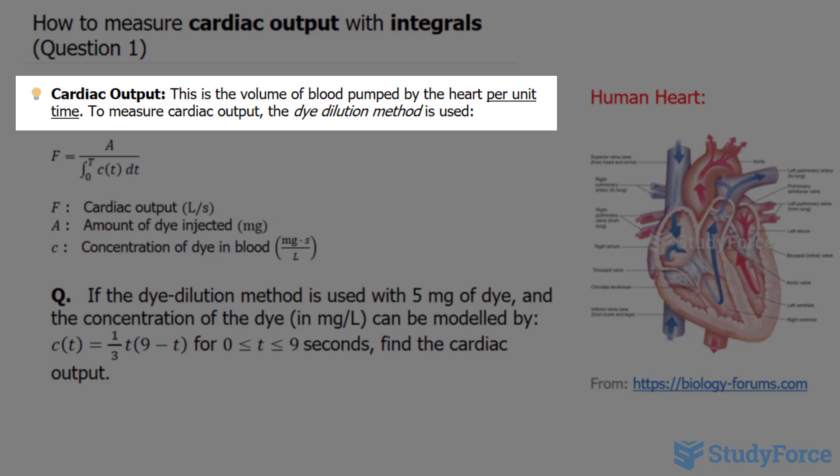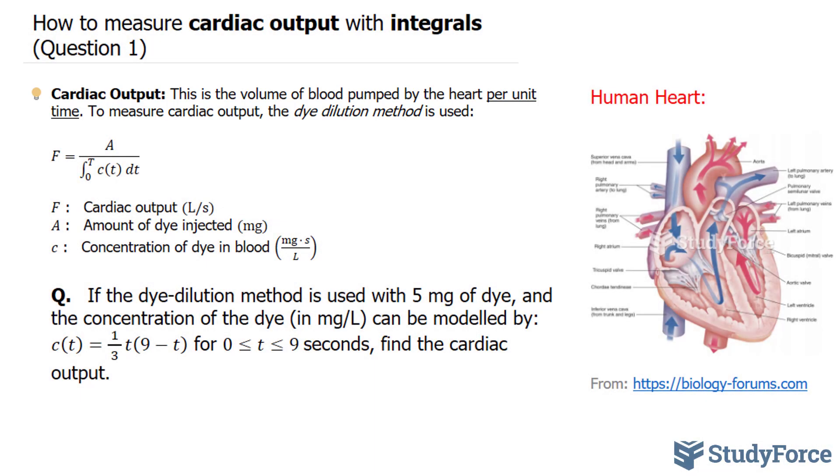To measure cardiac output, the dye dilution method is used, which is a dye is injected in the right atrium right here, and then measurements are taken at the aorta.